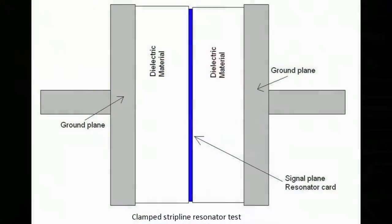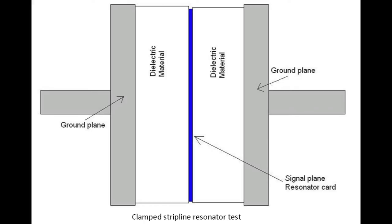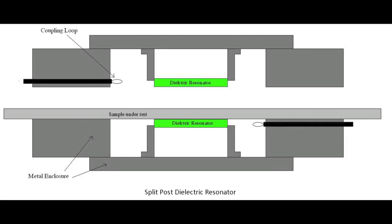The following slide summarizes the four most common test methods used in the high-frequency industry. The clamp stripline test, shown in the upper left, is used to test raw substrate in large volume and quickly. The copper-clad laminate has all the copper etched off, and the dielectric material is tested in a clamping fixture. Ground planes are on the left and right, with a resonator card in the middle. Samples are placed on both sides, clamped together to form a ground-signal-ground stripline structure, and the resonator is excited to determine the dielectric constant.